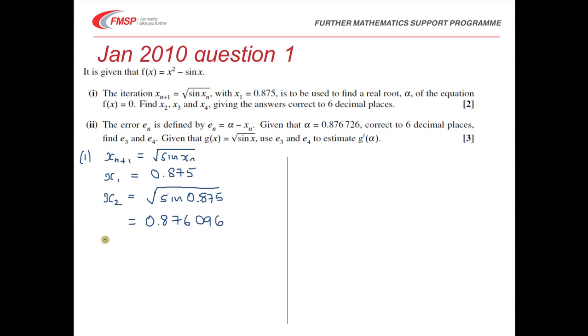So we will get 0.876096. It says to do this to six decimal places, so we just need to be careful. You probably could be just using your answer button on your calculator to find x_3, which is 0.876496.